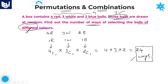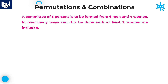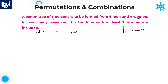Let's see the next question. A committee of five persons is to be formed from six men and four women. Total six men and four women are there, and we need to form a committee consisting of five persons. Out of 10 members we need to select five members.